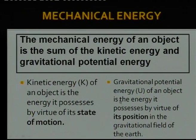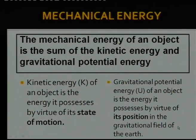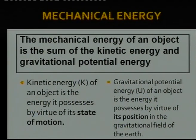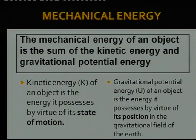Gravitational potential energy of an object is the energy it possesses by virtue of its position in the gravitational field of the Earth — basically how high it is from your reference point. Your reference point could be the table or the ground: how high is it from the table, how high is it from the ground?